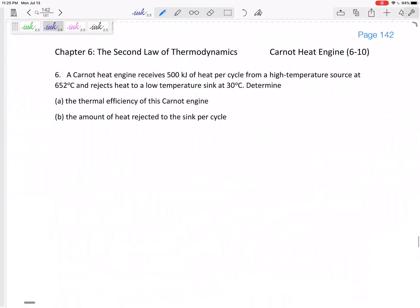All we need from this page is that now for Carnot efficiencies or for the best possible efficiencies, we can take those QLs and QHs and replace them with TLs and THs. Let's look at an example. A Carnot heat engine receives 500 kilojoules of heat per cycle from a high temperature source at 652 degrees Celsius and rejects heat to a low temperature sink at 30 degrees Celsius. Determine the thermal efficiency of the Carnot heat engine and the amount of heat rejected to the sink per cycle.